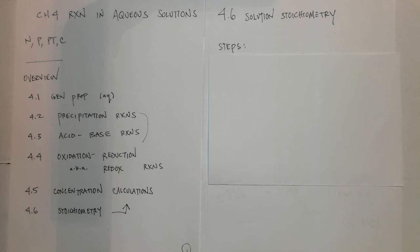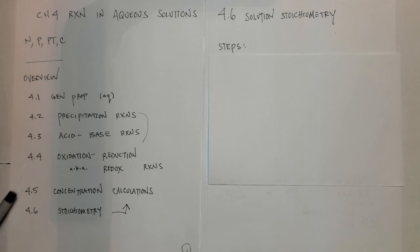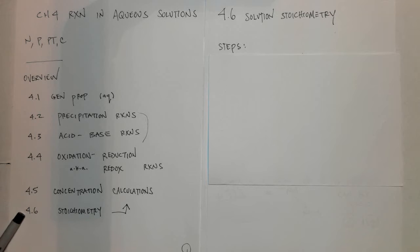This is the last video in Chapter 4. So far in the chapter we've learned some general properties of aqueous solutions — strong, weak, and nonelectrolytes — three different types of reactions, and last videocast you learned about calculating concentration, or something called molarity. This last section brings back some pieces from Chapter 3, and this is solution stoichiometry.